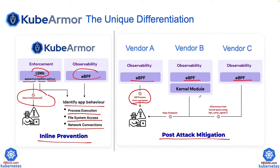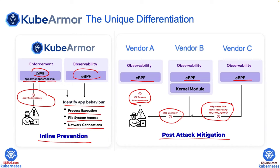Vendor B and Vendor C take a different approach: they detect the problem, kill the process from kernel space, and then stop the containers. But the difference compared to KubeArmor is still the same — it's too late. You detect the problem, kill the process, stop the container, but someone already took the secrets or encrypted your system. That's why KubeArmor has become very popular, especially for government and financial industries that require a heavy zero-trust architecture for runtime.